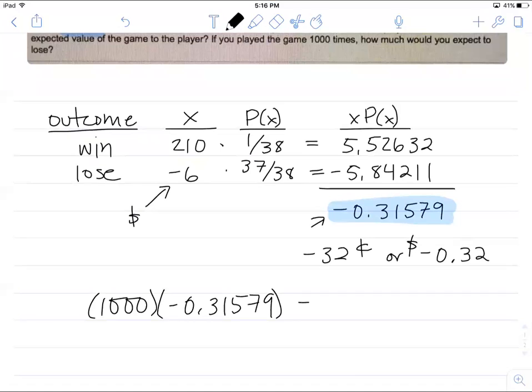When I do that, what I'm going to get is negative three hundred and fifteen dollars and seventy-nine cents. And what that means is if you walk into the casino and you play a thousand times, on average a player who does that is going to walk out about 316 dollars poorer than when they started.